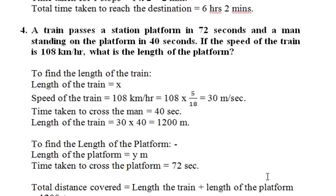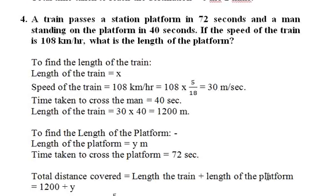Fourth question: A train passes a station platform in 72 seconds and a man standing on the platform in 40 seconds. If the speed of the train is 108 kilometers per hour, what is the length of the platform? We assume the length of the train to be x. Converting 108 km/h by multiplying by 5/18 gives 30 meters per second. To find the length of the train, we consider only the train length when crossing the man: 30 × 40 equals 1200 meters.